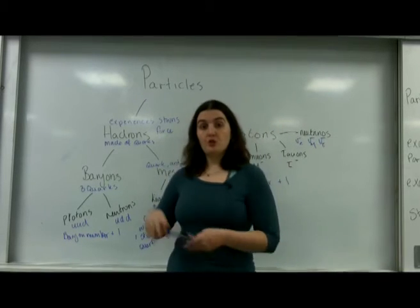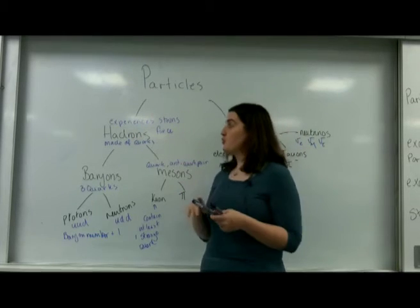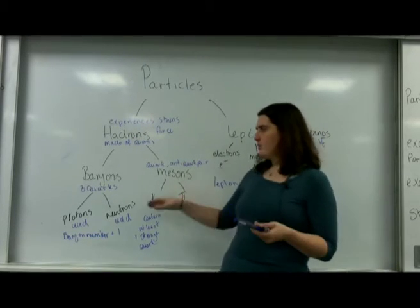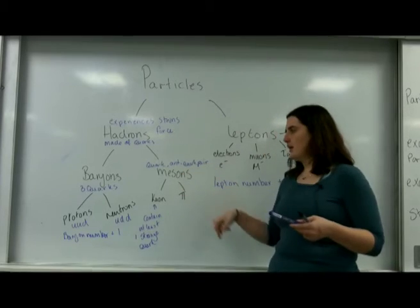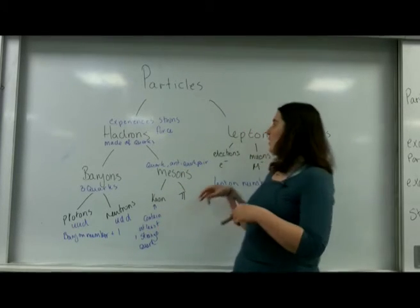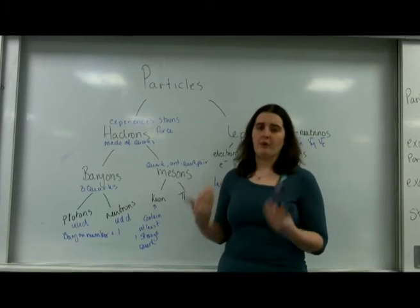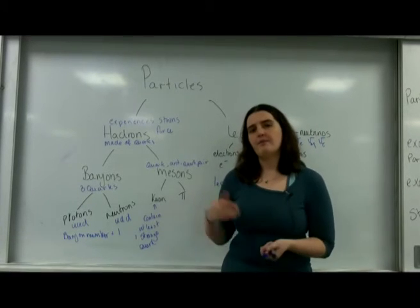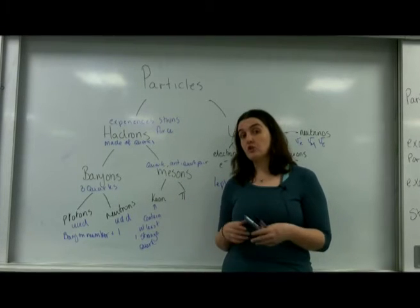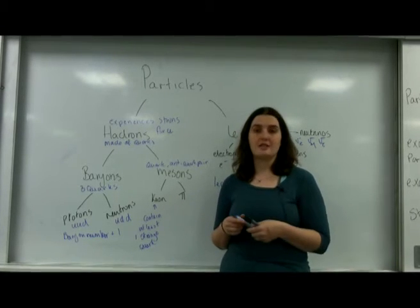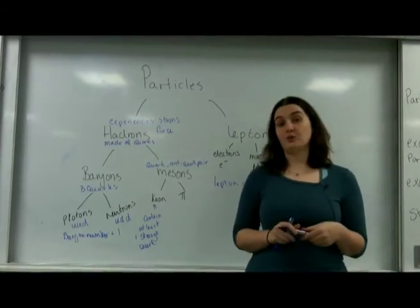If you are able to draw this family tree — knowing that hadrons experience a strong force, that baryons are made out of three quarks, that mesons are quark-anti-quark pairs, where the kaons and leptons are — you'll be able to look at equations and garner information that will help you solve missing particles, knowing the interaction, etc. So, this is the family tree of all particles.